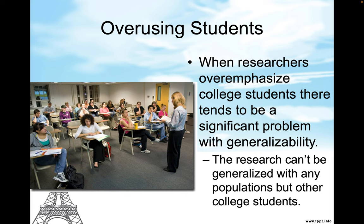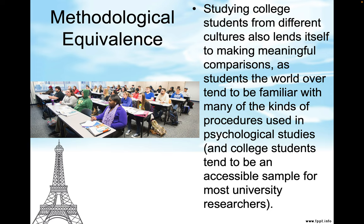Traditional students are students who go directly from high school right into college, so they tend to be 18, 19, 20, 21, or 22 years old — relatively young. Non-traditional students, like most of the students at this college, are older — in their late 20s, maybe their 30s or 40s. But most colleges have mostly traditional students.